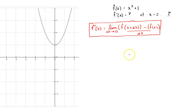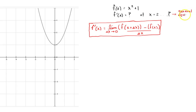What we're going to do is look at two different things: we're going to look at the function specifically at x equals 2, and then we're going to try to find the general equation for f of x — in other words, create a function. First time, we're just going to find a number: what is the exact slope at x equals 2?